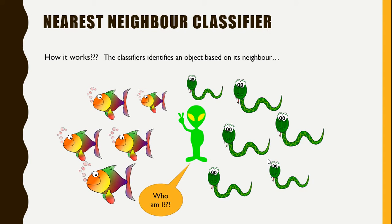Based on this data, since three of its four neighbors are snakes and one is a fish, this object is probably a snake and not a fish. This is the basic idea of the nearest neighbor classifier.